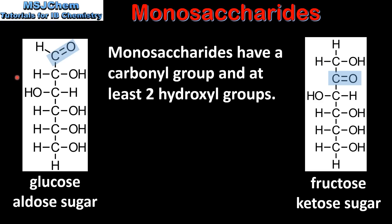Here we have the straight chain structure of glucose. It's an aldose sugar which means it has an aldehyde group which contains a carbon double bonded to an oxygen, which is a carbonyl group. On the right we have the straight chain structure of fructose. Fructose is a ketose sugar — it has a ketone group which contains a carbonyl group.